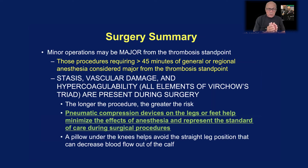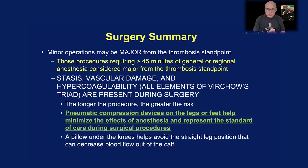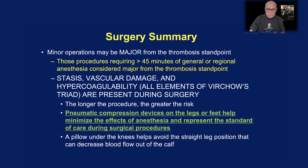In summary, minor operations may be major from the thrombosis standpoint. For example, a minor procedure such as repair of an ankle fracture as an outpatient — if that patient brings baggage to that operation such as a past history of thrombosis, inflammatory bowel disease, cancer, or infection — makes this low-risk outpatient procedure a very high-risk situation. Procedures requiring over 45 minutes of general or regional anesthesia are considered major from the thrombosis standpoint because it gives time for all of Virchow's factors to become activated: stasis, vascular damage, and hypercoagulability. The longer the procedure, the greater the risk. Pneumatic compression devices on the legs or feet help minimize the effects of anesthesia and represent the standard of care during surgical procedures.